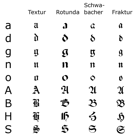The first Fraktur typeface arose in the early 16th century, when Emperor Maximilian I commissioned the design of the triumphal arch woodcut by Albrecht Dürer and had a new typeface created specifically for this purpose, designed by Hieronymus Andreae. Fraktur types for printing were established by the Augsburg publisher Johann Schönsberger at the issuance of a series of Maximilian's works such as his prayer book, the Gebetbuch.